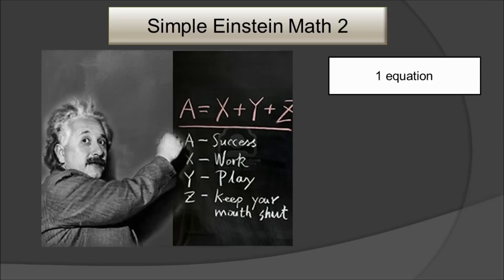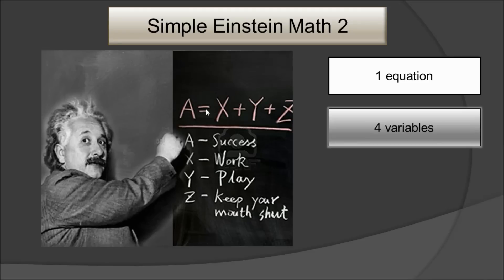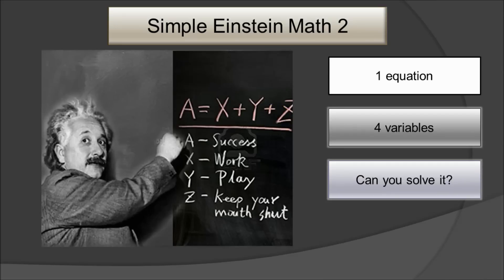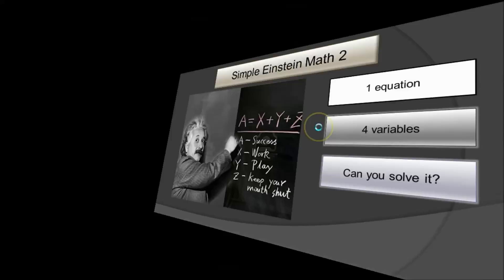Breaking it down a little bit: in this case there is one equality, so that is one equation. The A, X, Y, and Z individually—each one of them is a variable, so four variables. Can you solve it if you don't know all these X, Y, Z? No. Three of the four should be specified; only then can you have a specific answer.